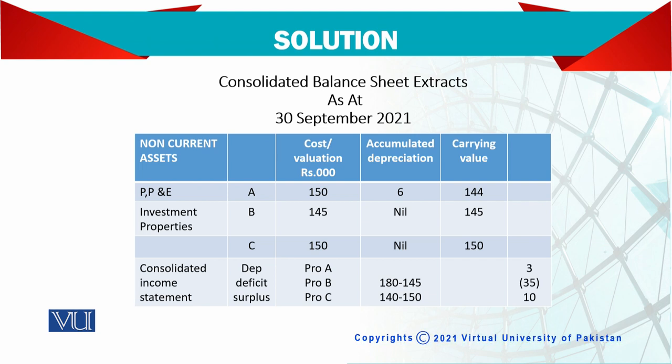It is very clear: if there is a drop in fair value, that goes to losses; if there is a gain, it goes to the profit and loss account as well. Any change in fair value will be taken to the profit and loss account, provided they are investment properties. Thank you very much.